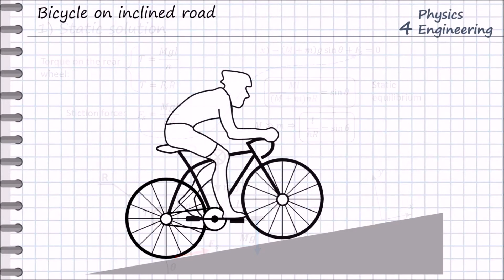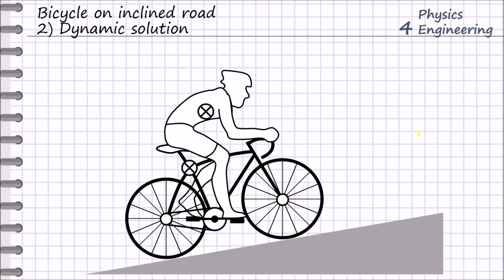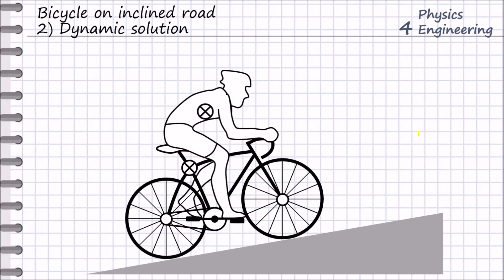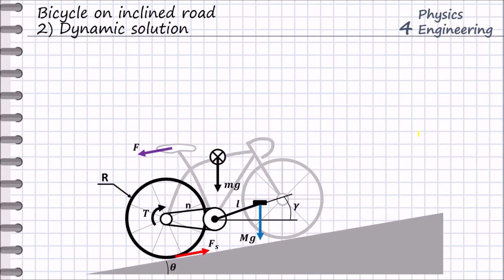Therefore the next solution considers the dynamic motion of the cyclist. As a first step, since the cyclist does not spin together with the pedal during riding, it is correct to consider that the center of mass of the cyclist and the bike does not change its relative position with respect to each other. In the dynamic model, the major difference compared to the static model is that the torque on the rear wheel is now a function of the angular position of the pedal.